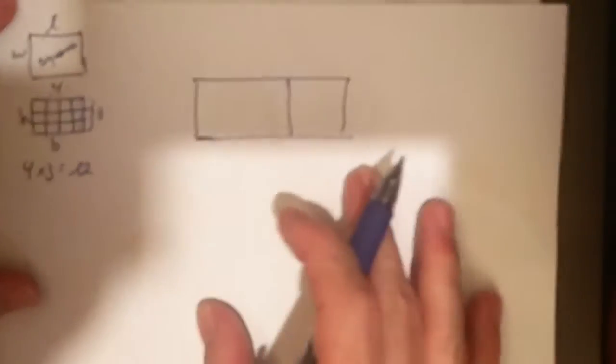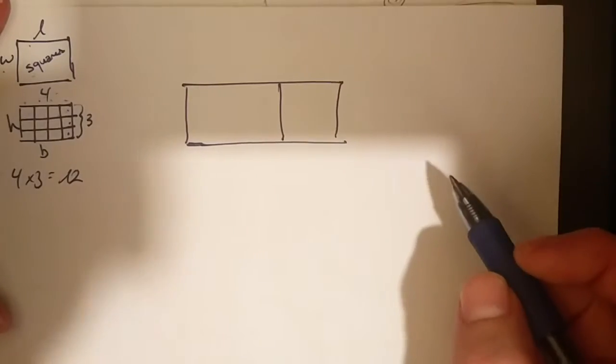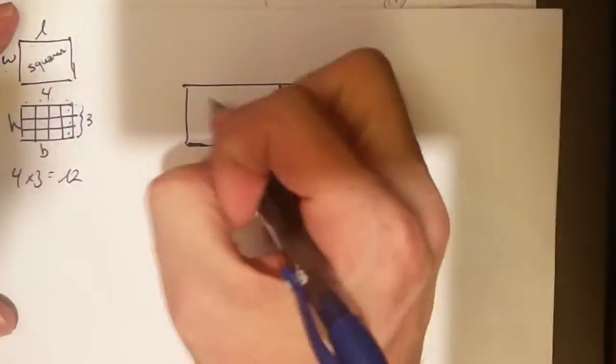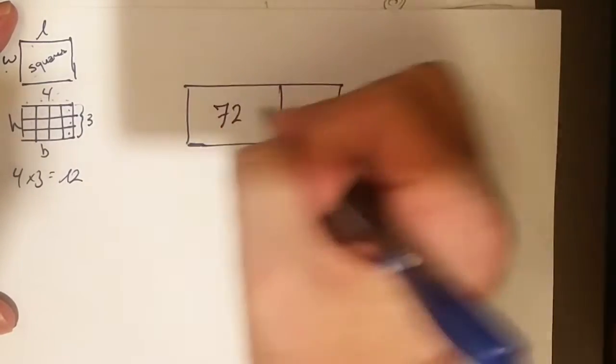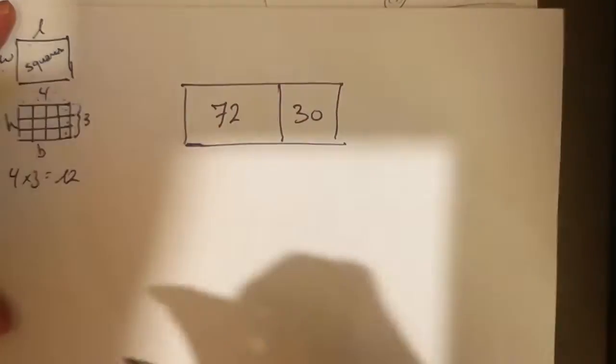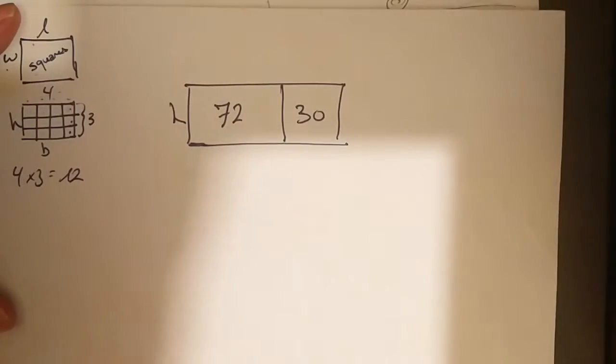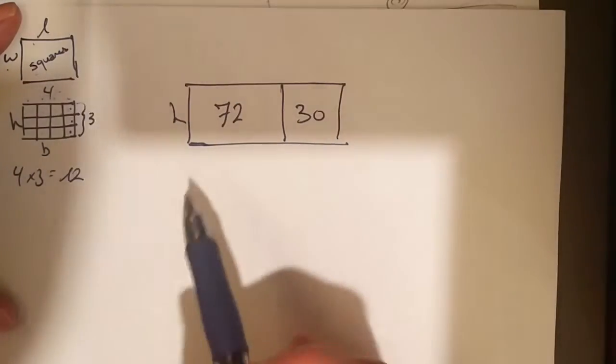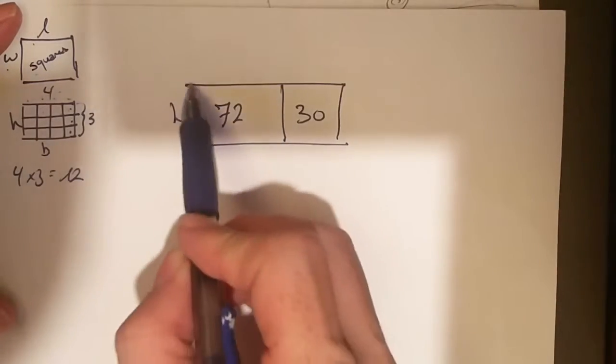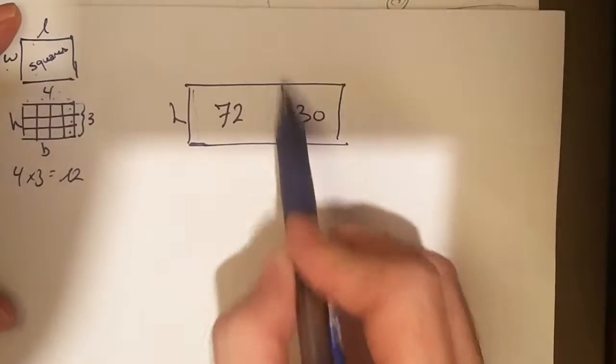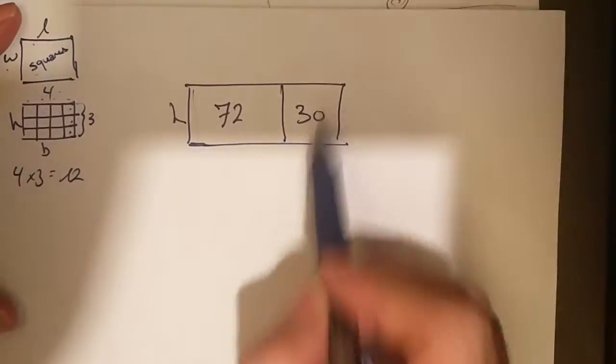So let's hop over here to this one. This looks very similar to the ones we learned in class today. You should remember from the exit ticket: you have 72 and 30, and you're asked to find out what is the height of that rectangle.